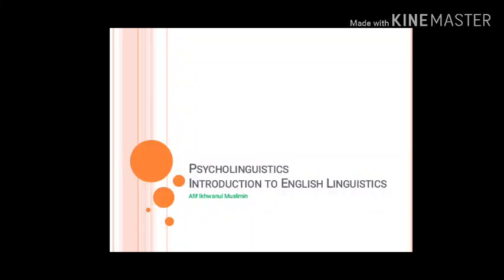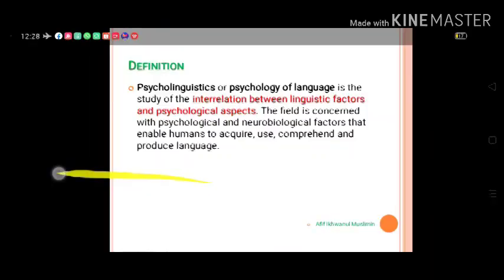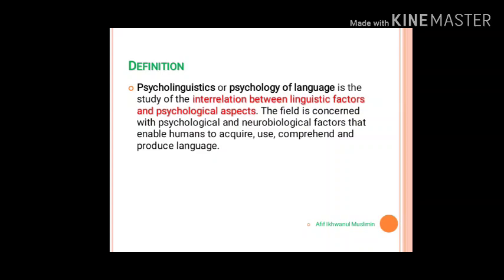Hello, good afternoon. Welcome back to our Introduction to English Linguistics class. Today I'd like to continue the discussion on the next branch of linguistics, which is called psycholinguistics. Psycholinguistics, previously called the psychology of language, is the study of interrelations between linguistic factors and psychological aspects. Some other scientists believe that psycholinguistics is the scientific study of language in relation to the mind and brain.